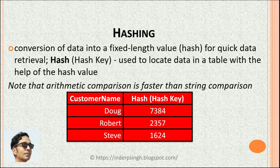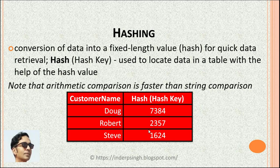Next in this DBMS explanation, hashing and indexing are two separate techniques that increase database performance and fetch data faster. In hashing, actual data is converted into a fixed-length value called a hash for quick data retrieval — this hash value was previously called a HashKey. The hash value is used to locate data in a table. For example, the DBMS can convert every customer name to its hash value; when you search for a customer name like Steve, it generates the hash and searches only the hashes, reaching that record faster. The DBMS does arithmetic comparison with each hash, which is faster than comparing strings.